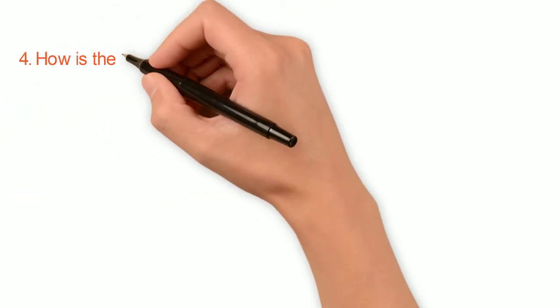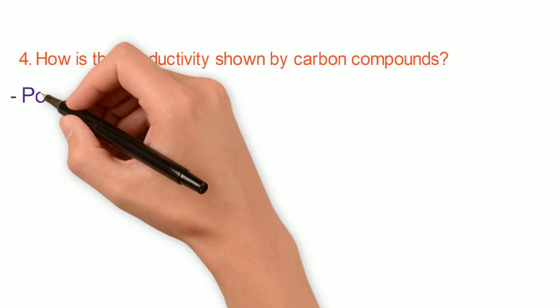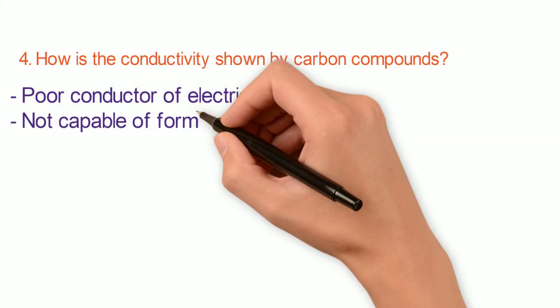Our fourth question is, how is the conductivity shown by carbon compounds? In general, they are poor conductors of electricity, because they are not capable of forming ions.